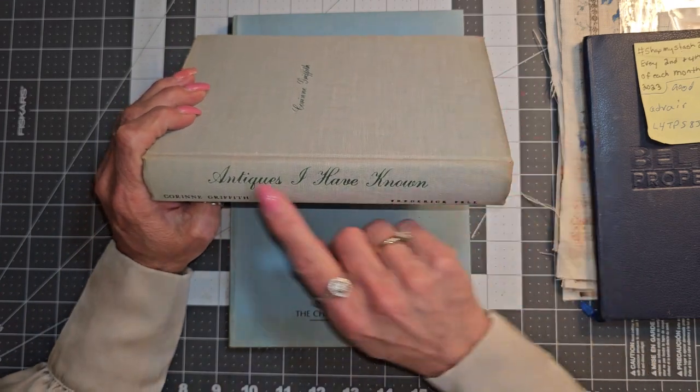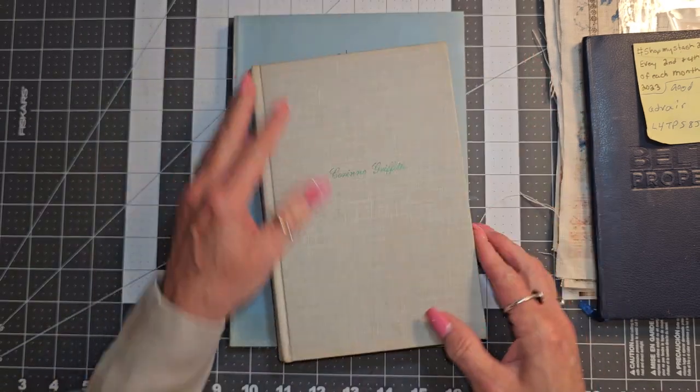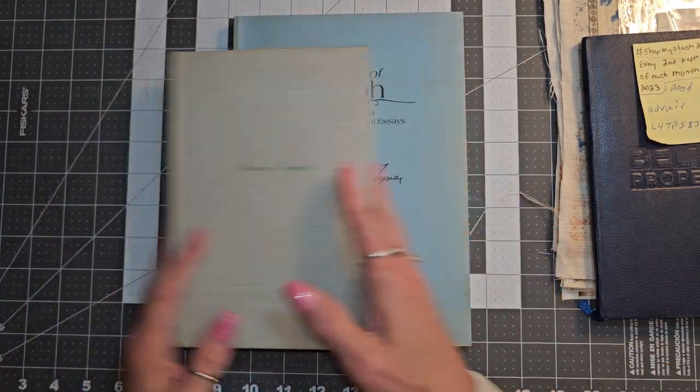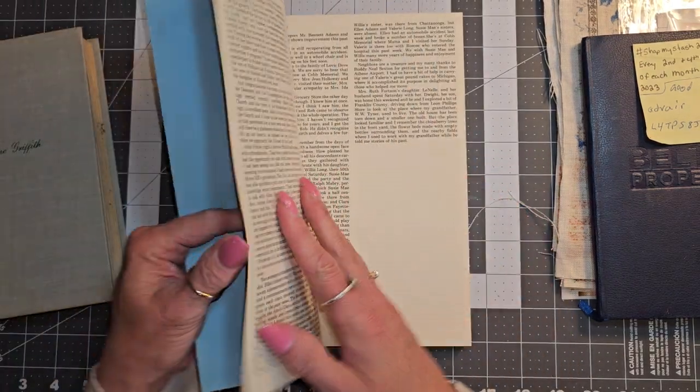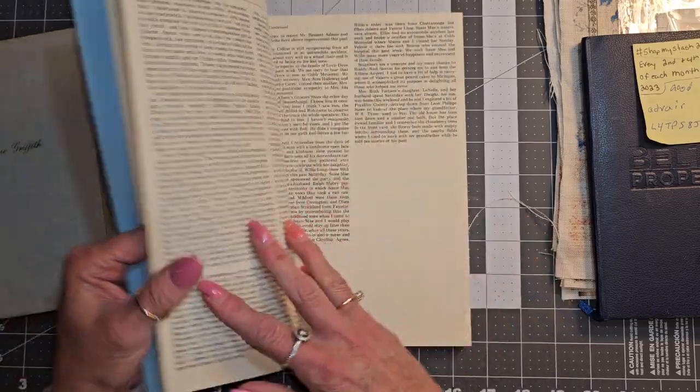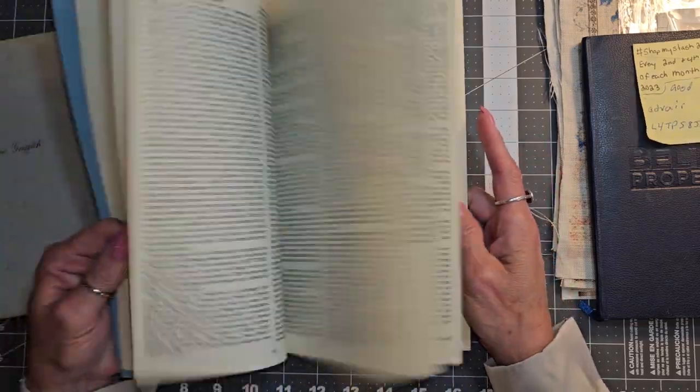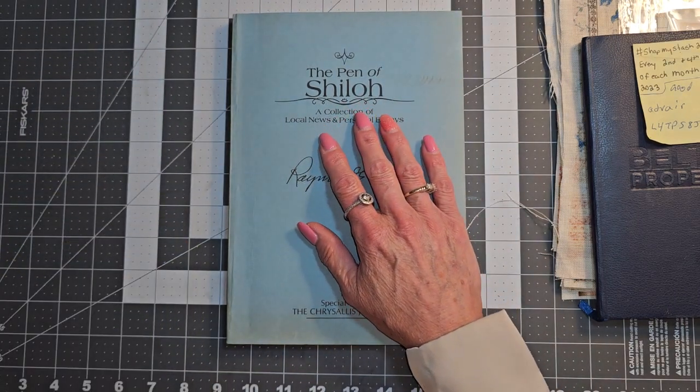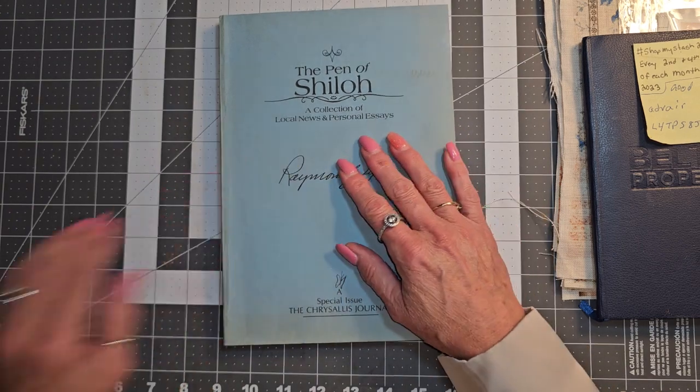But I have this one, this is Antiques I Have Known. I thought this would just be a good size for some mark making and the pages. But then I also got out this book here which is a soft cover book and it's bigger and I think I actually want to do the mark making in this one. So I think we're going to choose this one for our week 24 of hashtag Roxy's Weekly Challenge with the mark making.